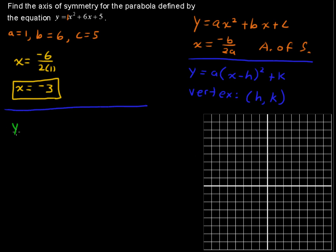So I'm going to say y equals x squared plus 6x, and then leave a space, plus 5. To complete the square, we take half of the coefficient of x and then square it. Half of 6 is 3, and 3 squared is 9. So to complete the square, I'm going to add 9 here.